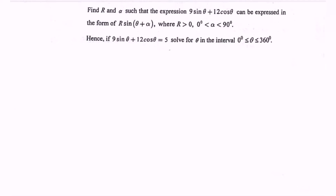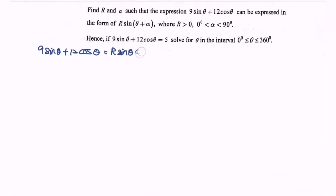Next we have the second part: find r and α such that 9sin(θ) + 12cos(θ) is in the form r·sin(θ + α). By using the compound angle formula, we expand to r·sin(θ)·cos(α) + r·cos(θ)·sin(α).